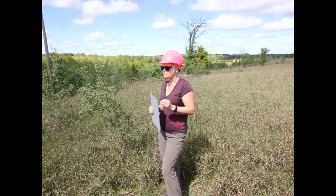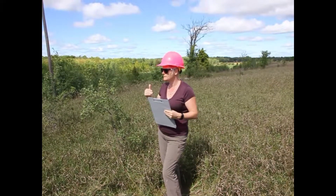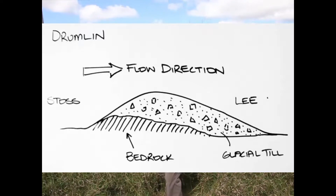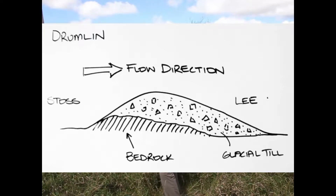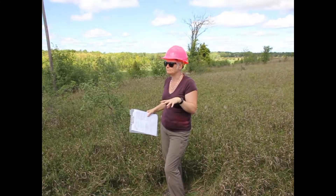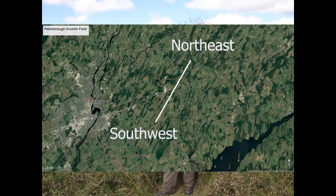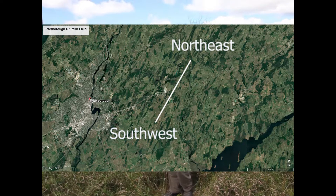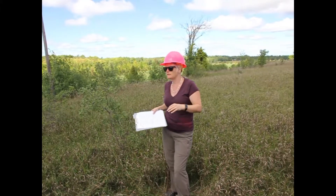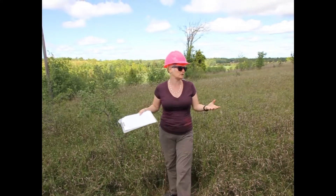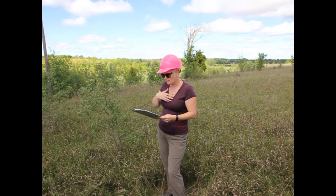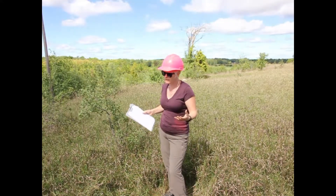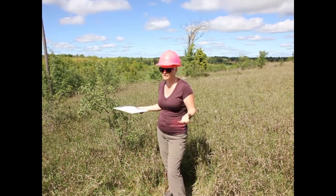Which end shows you the direction of ice advance? Which way was the ice moving when this drumlin was formed? Towards the lee end. So it was coming from the stoss end and moving in a southwesterly direction. If you look at a map of this area or Google Earth, you'll see distributed between Lindsay and Peterborough a whole region filled with drumlins aligned in that orientation — there are about 3,000 to 5,000 of them depending on which geomorphologist you talk to. Topographically they are about 25 meters high and can be up to 400 meters long.